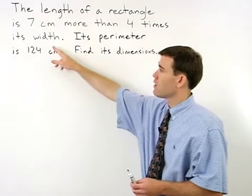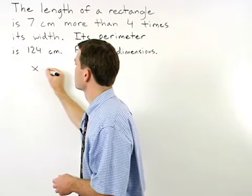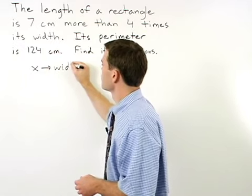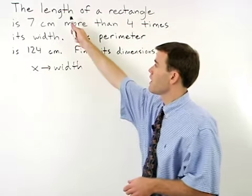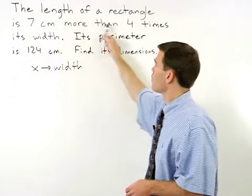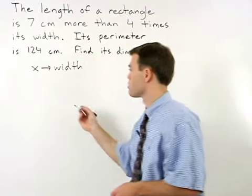So if we call our width x, that means that our length is 7 more than 4 times x, or 4x plus 7.